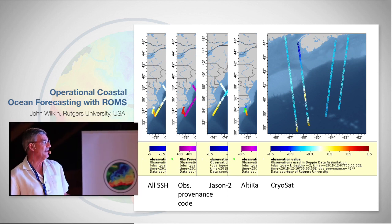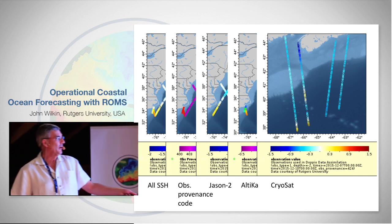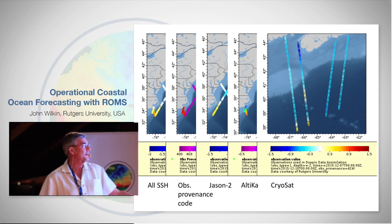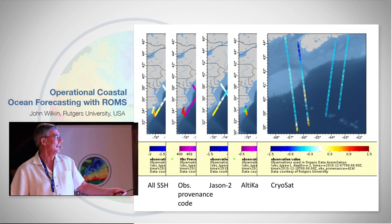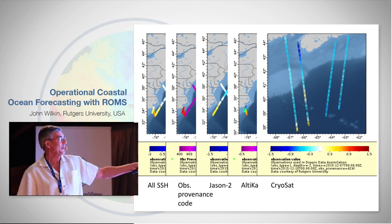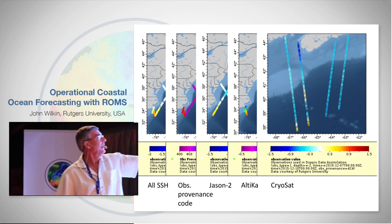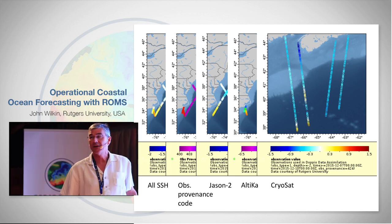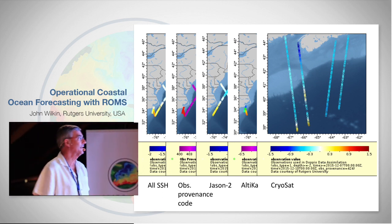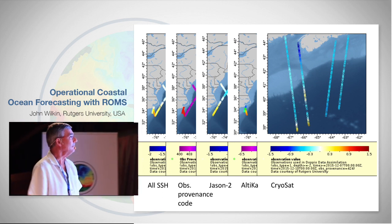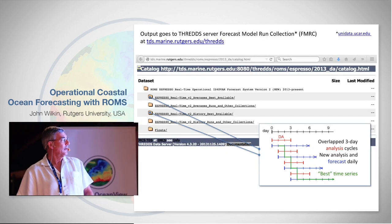We do the same thing for altimetry — these are all the altimetry data in a three-day window with different provenance codes. For those who know altimeter ground tracks: the purple is Jason, the red is Altika, and the orange is CryoSat. That's the sort of data we get in the course of three days.